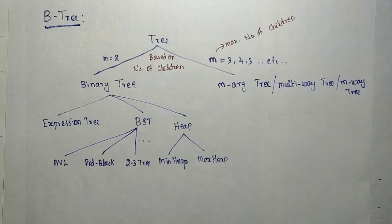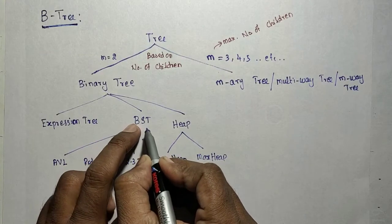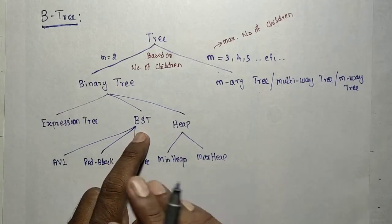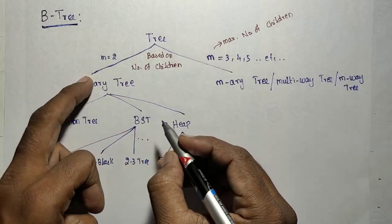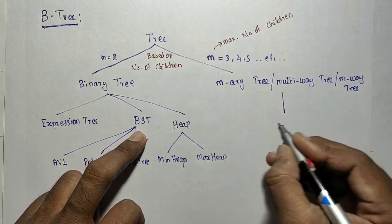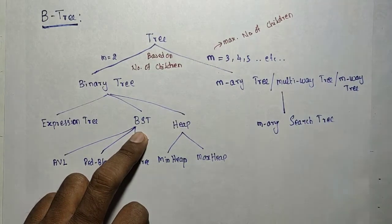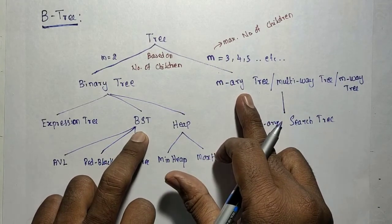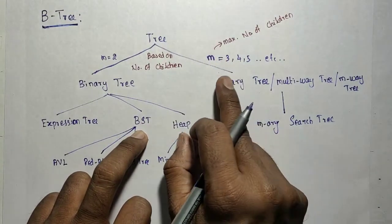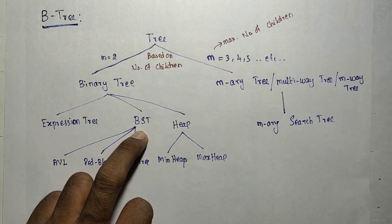Just as we classified the binary tree into expression tree, BST, and heap, we can similarly classify the m-ary tree. An m-way search tree follows the BST property — left subtree values are less than the root, and right subtree values are greater. Each node may have at most m children, and m equals 3 means maximum 3 children, m equals 5 means maximum 5 children.